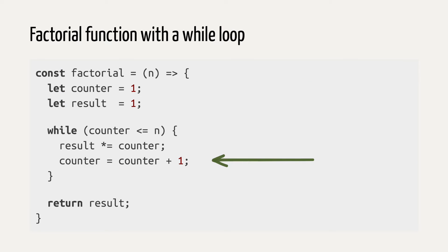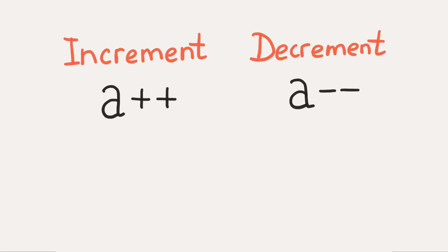Adding one to a variable is also very common, so instead of counter equals counter plus one, you can say counter plus plus. The same goes for minus. Counter equals counter minus one is the same as counter minus minus. These are the increment and decrement operators.